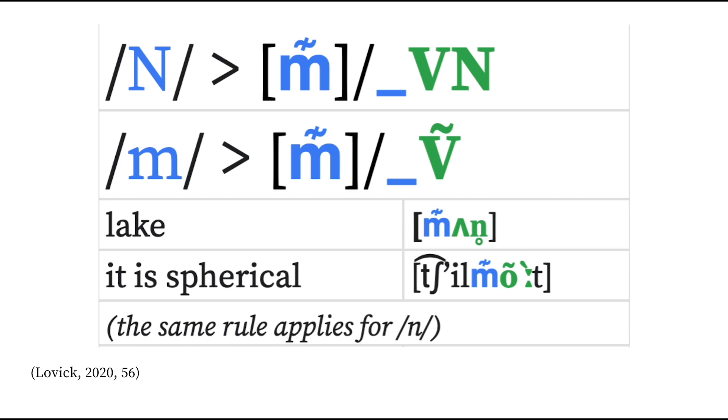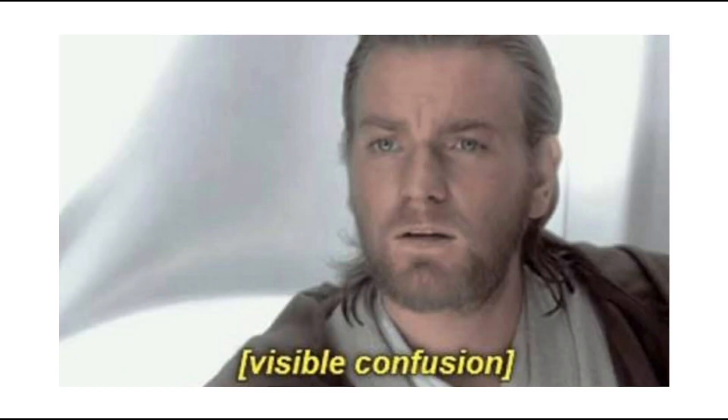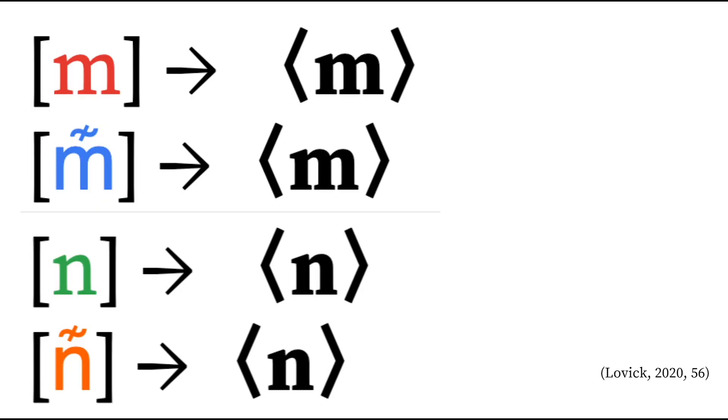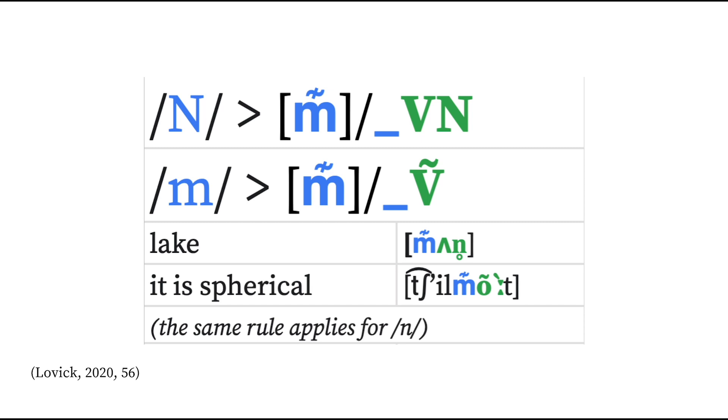The bilabial and alveolar nasals demonstrate denasalization in onset positions under certain conditions. As if denasalized nasals weren't confusing enough, the author uses the same symbols for both the nasal and denasalized alveolar. I've used the IPA diacritics, although they were not in the original text. From what I could tell, onset nasals denasalize if the word contains a later nasal consonant or vowel. It appears to be a form of long-distance dissimilation, although clearer data and transcription would help form a more accurate hypothesis.